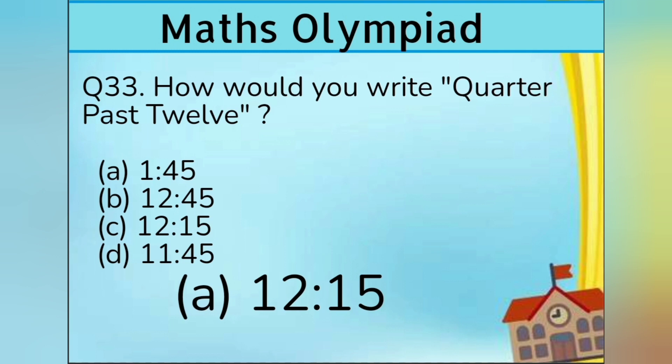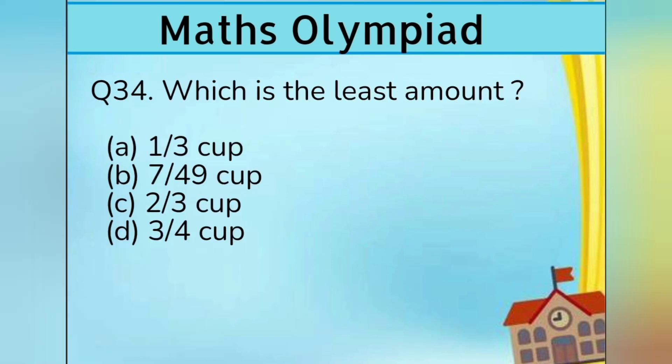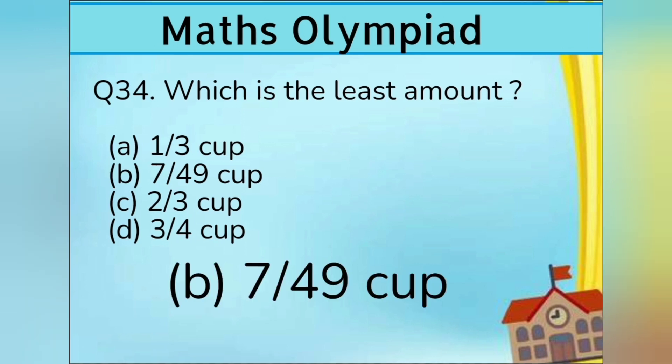Question 34. Which is the least amount? Option A 1/3 cup, Option B 7/49 cup, Option C 2/3 cup, and Option D 3/4 cup. Answer is Option B 7/49 cup.